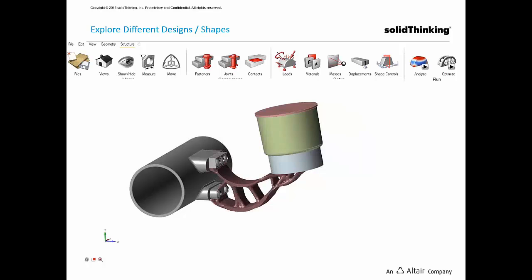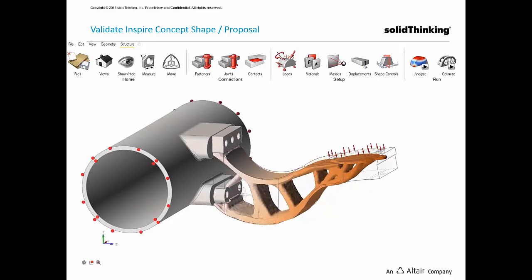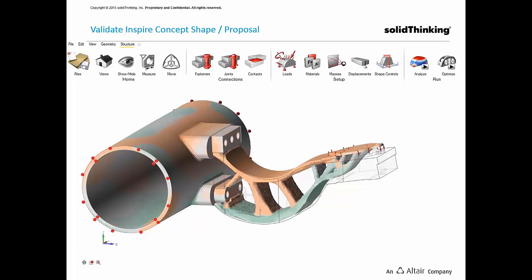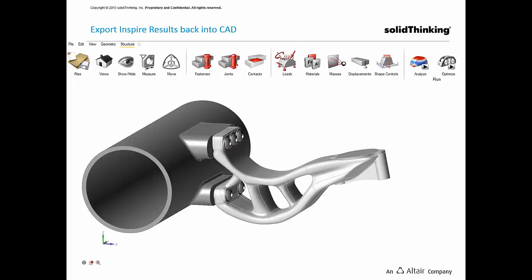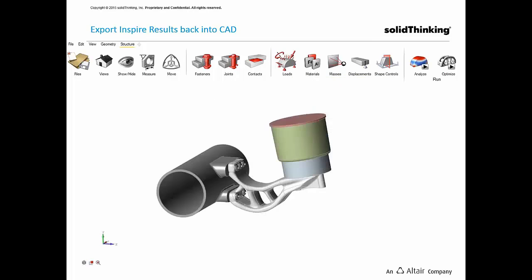Once you get a more manufacturable design, you can further perform analysis on it and validate the concept. INSPIRE finds the stresses and displacements on the generated concept. Once you feel that INSPIRE is meeting all the performance requirements, you can further create a CAD on top of this concept, take it back into your CAD package, and create a new part around it. INSPIRE basically provides a result which you can use as a skeleton to design your new component.